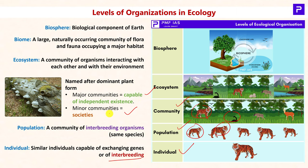Minor communities, on the other hand, are not capable of independent existence. For example, a rotten log of wood forms a habitat for mushrooms, mosses, and various microorganisms. In the case of a forest fire, the entire community gets lost. Thus, minor communities are greatly dependent on surrounding factors. Major communities, by contrast, are self-sustainable for a very long duration.